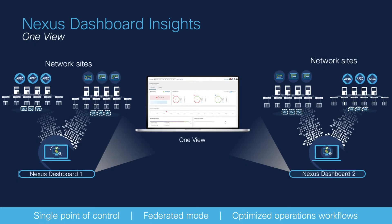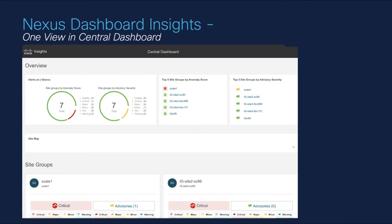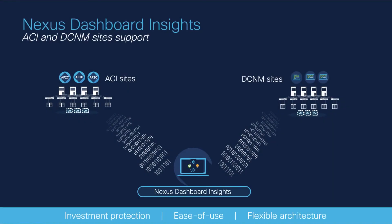The OneView feature in Nexus Dashboard Insights offers the functionality of a single pane of glass, or a central point of operation for Nexus Dashboard Insights services. After configuring the clusters in Cisco Nexus Dashboard, you can access and perform all operations on a site group or a site using the OneView function. Nexus Dashboard Insights supports both ACI and DCNM sites in a single instance, so you can onboard one or more ACI sites as well as one or more DCNM sites in a single Nexus Dashboard cluster.